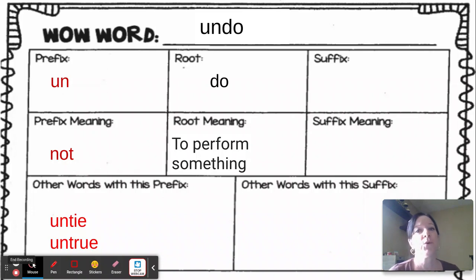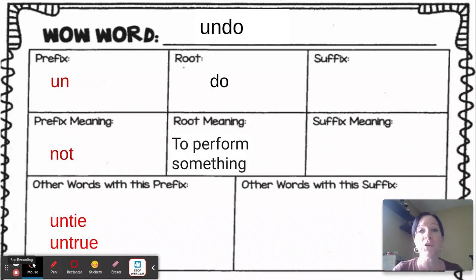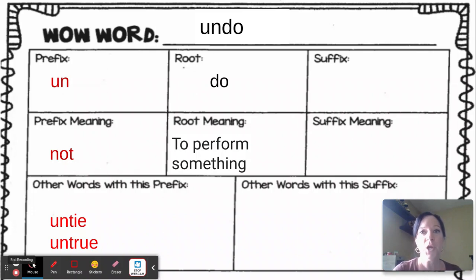So if you undo something, you're unperforming it. I want you to go ahead and on the back page where it says wow word, record the information that you see here on this screen.